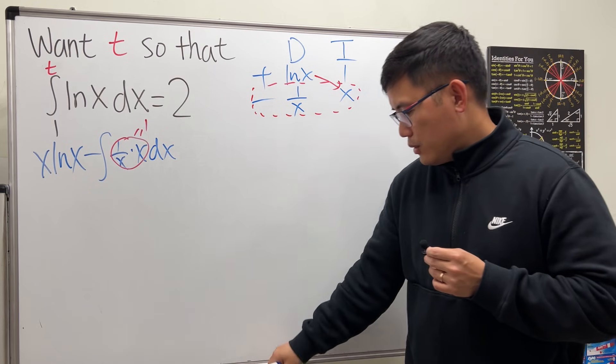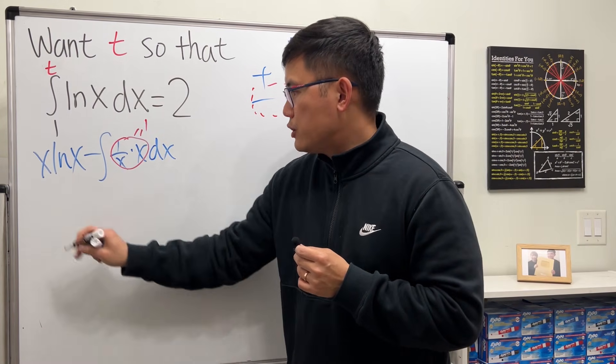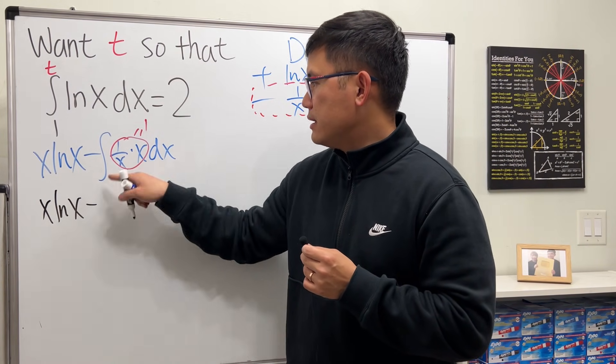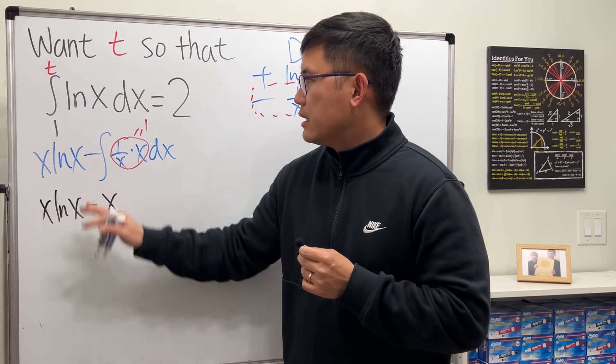And this right here is just equal to 1, so we're just integrating 1. Okay, so the result of that is just x ln(x) minus, integrating 1 is x, so that's the result of integration.